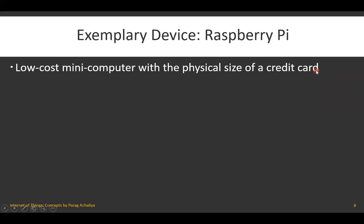To summarize: Raspberry Pi is a physical IoT device, it has the size of a credit card, it is treated as a mini computer, and it is low cost in nature, available at a very cheap price.